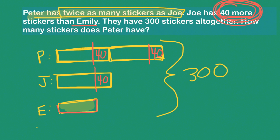Okay, so what do I notice now? Let's look at this Emily block. I now see that if I look at Emily's block, I have a similar block for Peter and Joe — except Peter and Joe have little extra bits hanging off. If I get rid of those extra bits, then I can divide by these 1, 2, 3, 4 equal-size blocks. You see these little green bits? 1, 2, 3, 4 — they're the same size. So if I get rid of these extra 40s, then I can divide by 4.